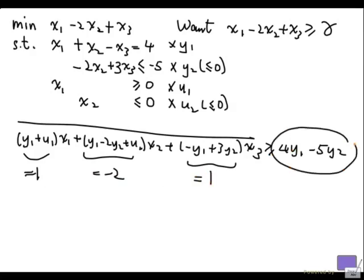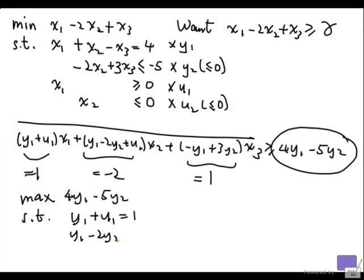And we want the right hand side to be as big as possible to give the best possible lower bound that we can get using this method. So we are trying to maximize 4y1 - 5y2, subject to all these constraints: y1 + u1 equal to 1, y1 - 2y2 + u2 equal to -2, -y1 + 3y2 equal to 1, and u1 has to be non-negative. So remember that we want to maintain the same sense, so u1 has to be non-negative, and u2 has to be non-positive.